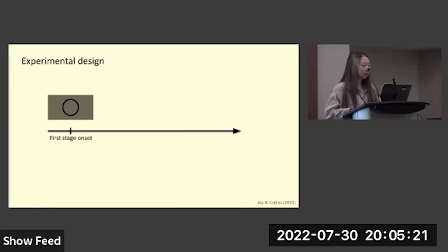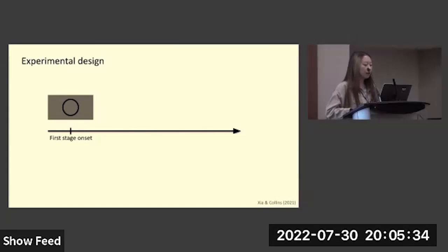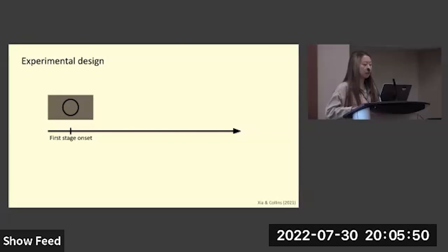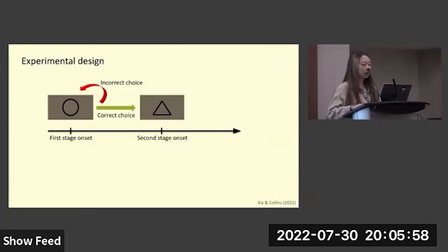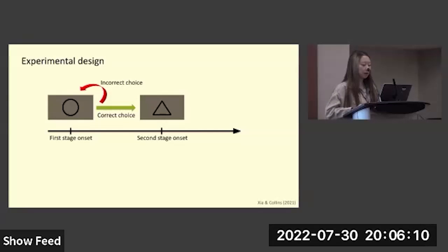Now I will introduce our experimental design by walking through a trial and then formalizing the questions in the context of this experiment, along with our hypotheses. Each trial consists of two stages. In the first stage, the participant sees a stimulus and is tasked with pressing among four different keys to find the correct key corresponding to that stimulus. If they press a wrong key, they keep seeing the stimulus until they get the correct key, which leads to the second stage where a second-stage stimulus is presented, and again the participant must press among the same four keys to find the correct one.